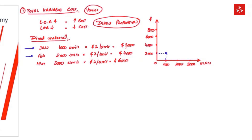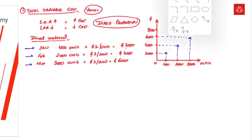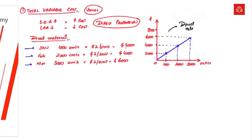For February, the total level of activity is 2,000 units and the total cost is $4,000. For March, the total level of activity is 3,000 units and total cost is $6,000. If we connect all these points we get a straight line between the x-axis and y-axis. This straight line shows a direct relationship — when the level of activity increases, total variable cost also increases; when it decreases, total variable cost also decreases.